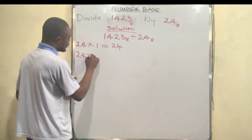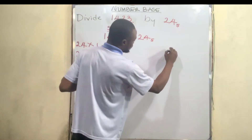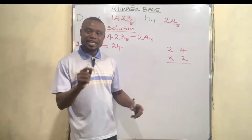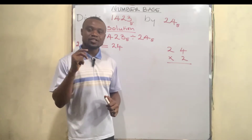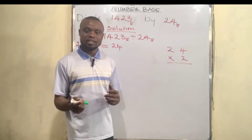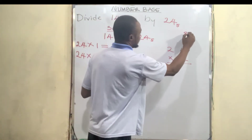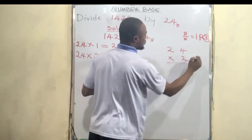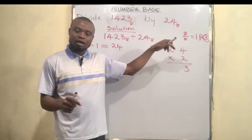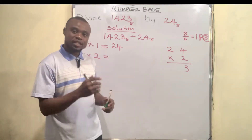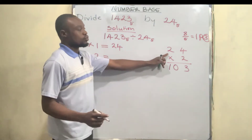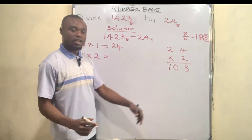So 24 multiplied by 2: two times four is eight, but there's no eight in base 5 — the highest number in base 5 is four. Eight in base 5: five goes into eight one remainder three, so we write the remainder 3 and carry the 1. Then two times two is four, plus the carried 1 makes five. Five in base 5 is one remainder zero. So 24 base 5 multiplied by 2 is 103 base 5.